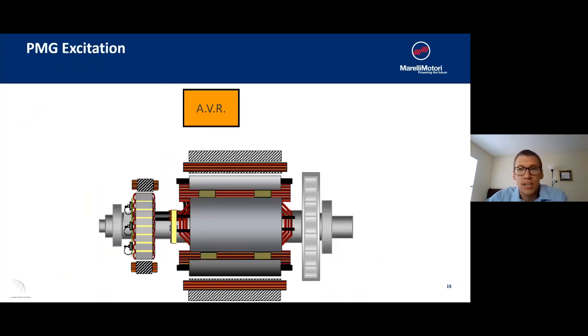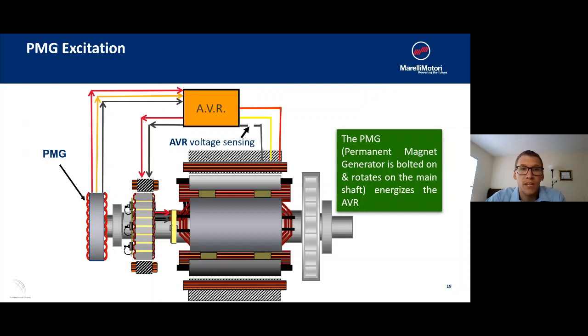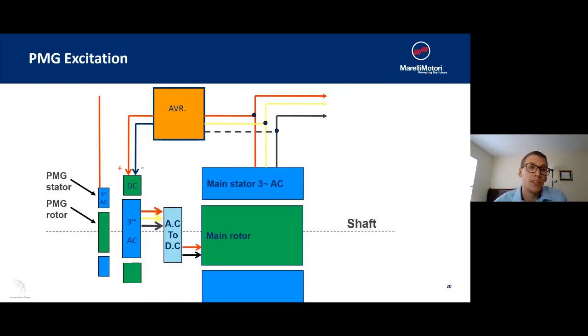For PMG excitation, it's very similar to the auxiliary wound, where you have the AVR feeding the exciter stator and sensing the voltage that's coming out of the main stator. But the only difference is that PMG is what's going to be feeding the AVR. So any dips you see from the current is not going to affect the feeding of the AVR. So it's a much cleaner signal, much cleaner voltage. And here's another example of where we're going to see the three-phase and the single-phase AC and DC currents, where you're having the AVR feed the DC current into the exciter stator, inducing it into the main rotor.